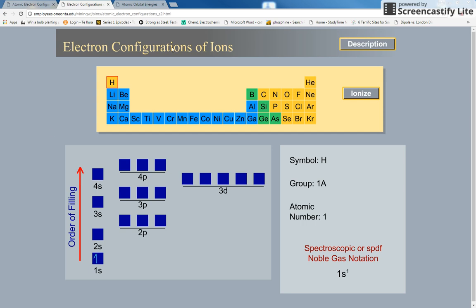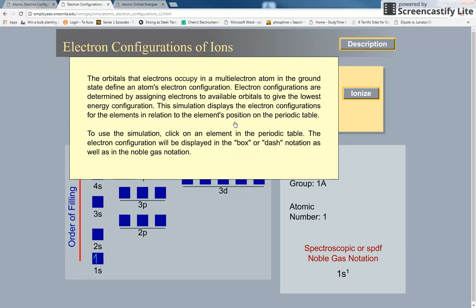Kia ora, this is the electron configurations of ions simulation. You can read what you need to do in this description. What we're looking at is the electron configuration of the element, and then when we turn it into an ion by either adding or taking away electrons, what happens to the electron configuration.